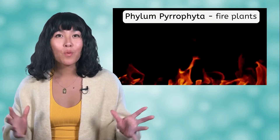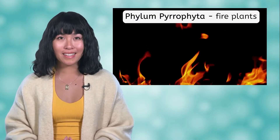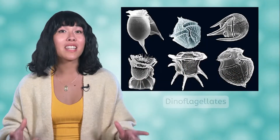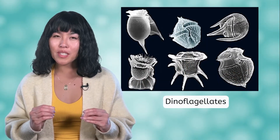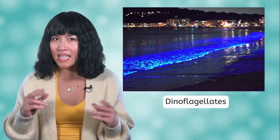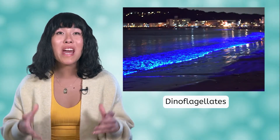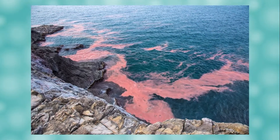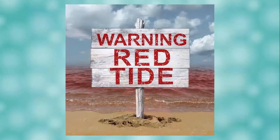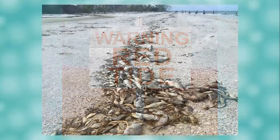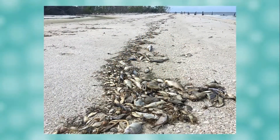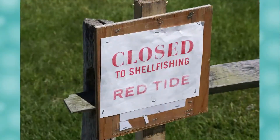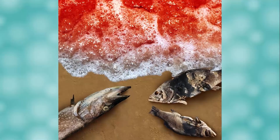Our next phylum is named after fire — the Pyrophyta, which literally translates to fire plants. More commonly known as dinoflagellates, these microscopic creatures give off light when the water they are swimming in is disturbed, and can make the ocean glow in the dark. But an overgrowth of some species of dinoflagellates leads to red tide, an oceanic condition that is toxic to humans and much of the marine life in the water as well. When red tide conditions are present, you'll need to stay out of the water and avoid eating seafood caught from the contaminated water.